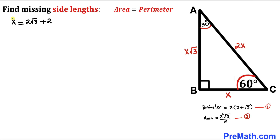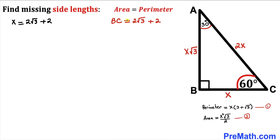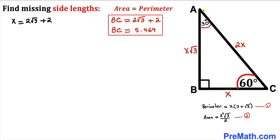That is our BC side length. So BC equals 2 times square root of 3 plus 2, which in decimal is approximately 5.464 units.